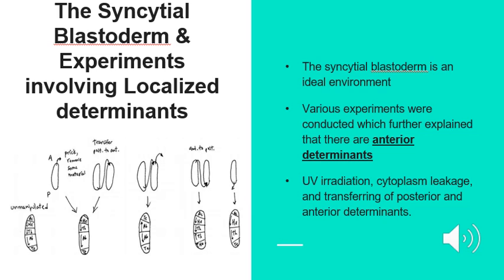The syncytial blastoderm is an ideal environment for these gradients, containing both protein and RNA, which are then able to diffuse from a point source. Various experiments were conducted which further explained that there are determinants that specify either the anterior or posterior fates while inhibiting the other. These experiments included manipulations involving UV irradiation, cytoplasm leakage, and transferring of posterior and anterior determinants.